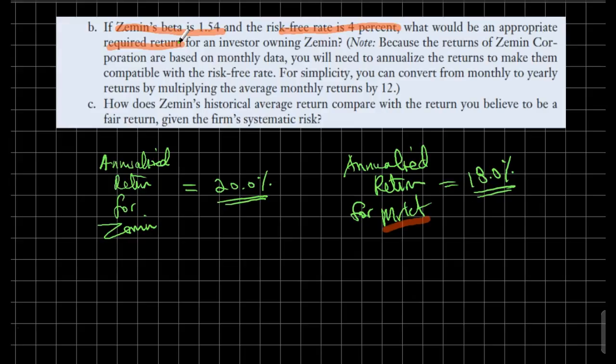Given that fact, what would have been an appropriate required return for an investor owning Zemin given this risk profile of 1.54? Recall the difference between standard deviation and beta. They both measure riskiness of investment, but with a flavor. If you have a well-diversified portfolio and add a new investment, it makes more sense to look at the beta of that security, whereas if you're investing in a single investment, you only worry about the standard deviation.